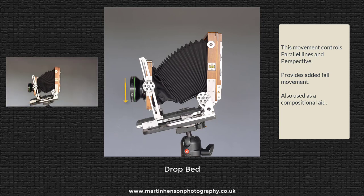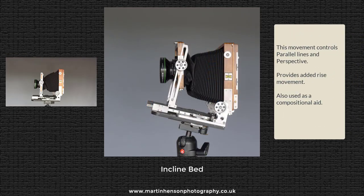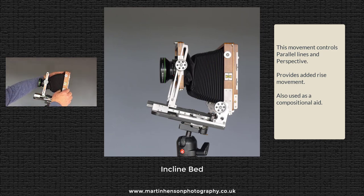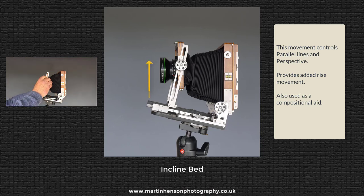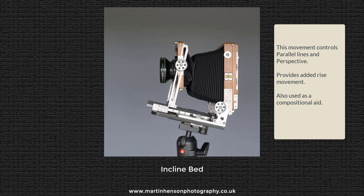Opposite to drop bed is inclined bed. You keep the front and rear standards level, incline the bed upwards, then push the lens upwards on the front standard. This gives you more rise than you'd get by simply pushing the lens up when the camera is level. Between drop bed and inclined bed, you get much greater range of rise and fall.